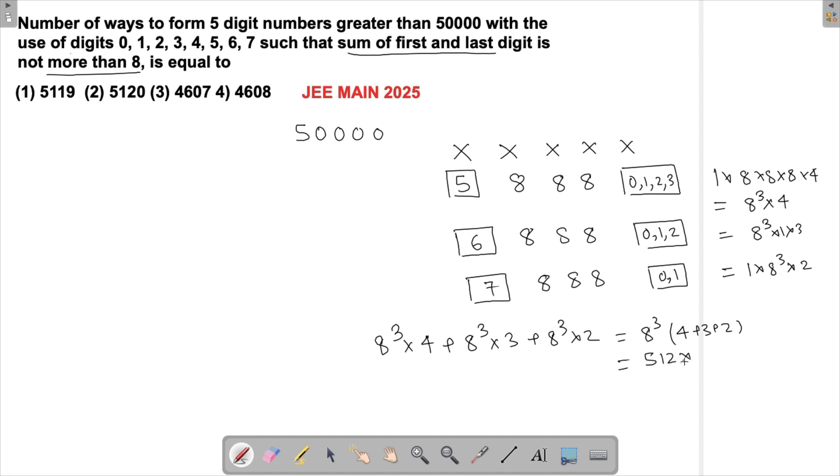Now 8³ will be 512, right? 512 × 9 will give you 4608.